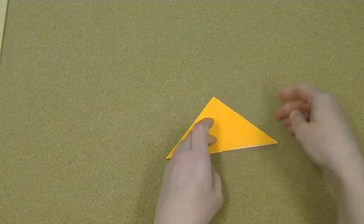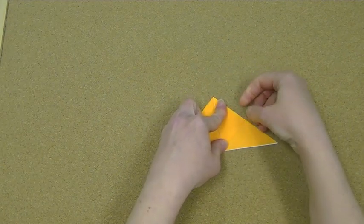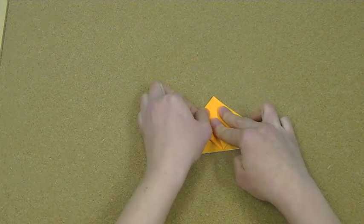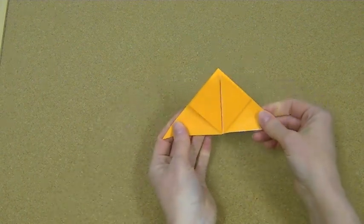And then what we're going to do is take one of these flaps and fold it up to the top. And do the same thing on the other side. So that you have something that looks like this.